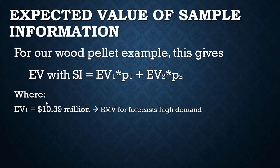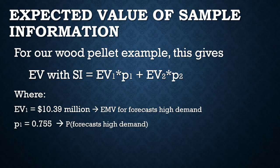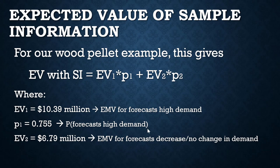The expected value related to a high demand forecast is 10.39 million — see the previous video for details on calculating this number. The probability of the forecaster forecasting high demand is 0.755, which was derived from the Bayes calculations covered in one of the first videos in this section.